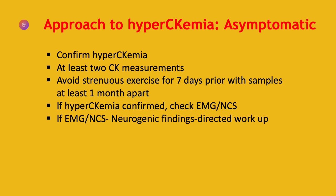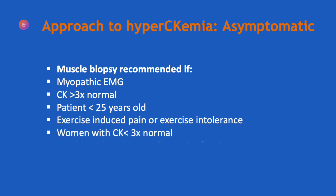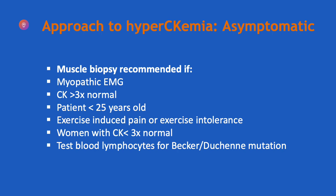If hyperCKemia is confirmed, perform nerve conduction studies and EMG. If EMG and nerve conduction studies show neurogenic findings, a directed workup is recommended. Muscle biopsy may be performed if one or more of the following applies: EMG showing myopathic or nonspecific changes; serum CK level more than three times above normal; patient age less than 25 years; exercise-induced pain or exercise intolerance; or women with CK less than three times normal. Before performing a muscle biopsy, DNA analysis on blood lymphocytes for Becker and Duchenne mutations is recommended.